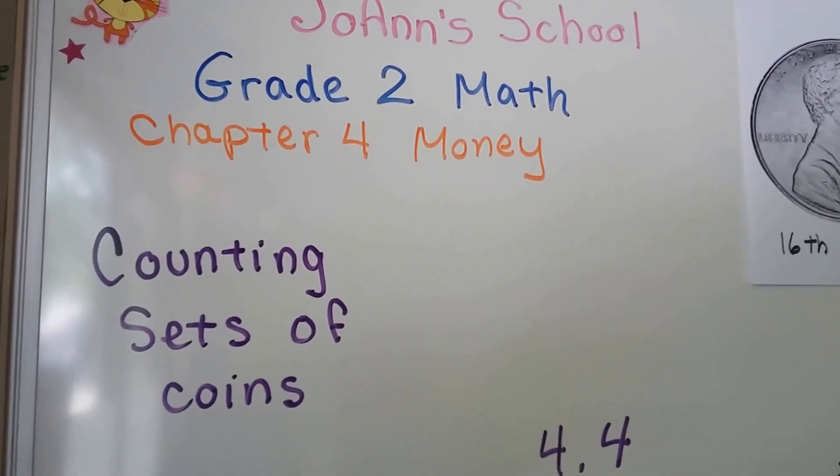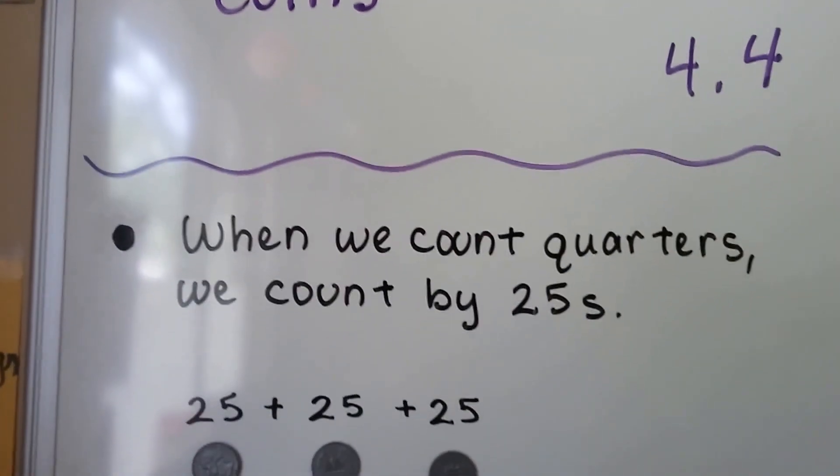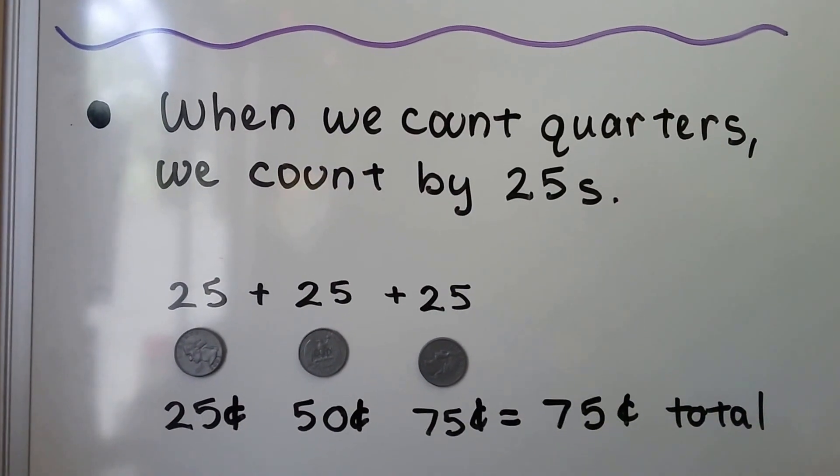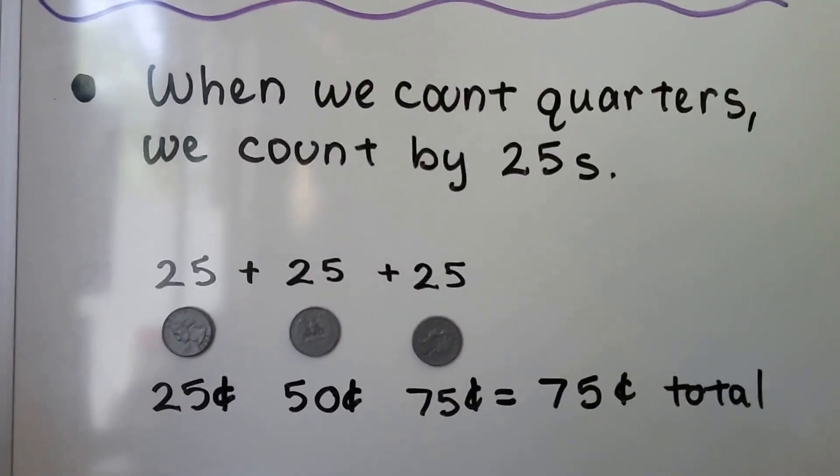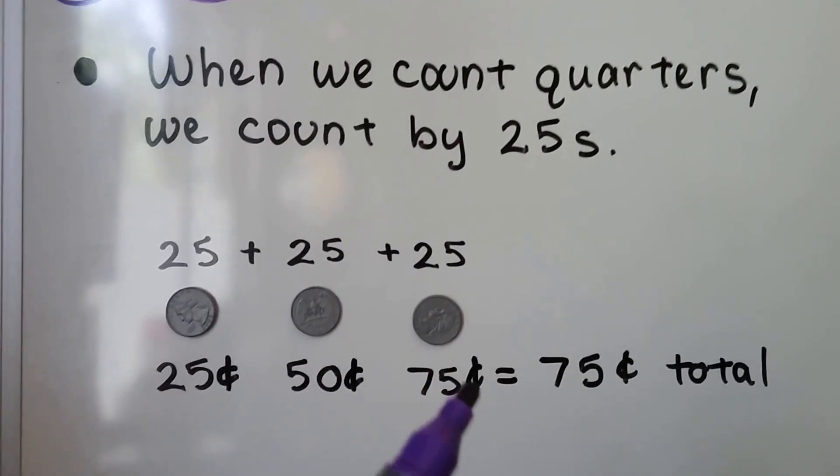Counting sets of coins less than 4.4. When we count quarters, we count by 25s. Now, I know that sounds like it might be hard, but it's really not. We just have to remember three numbers: we have to remember a 25, a 50, and a 75.